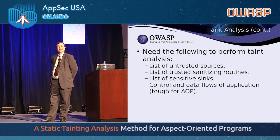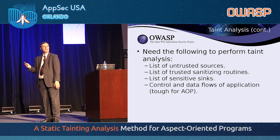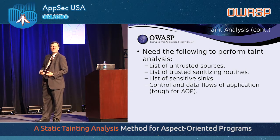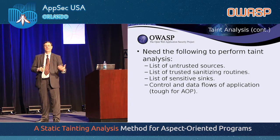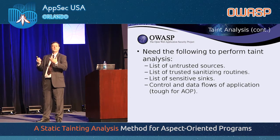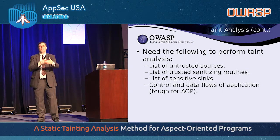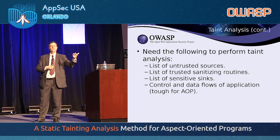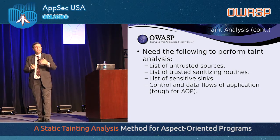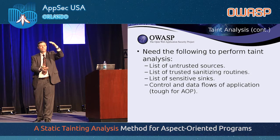Here are the items we need for a valid taint analysis. We need a list of untrusted sources — that's context sensitive, it depends on the application. A web application has different untrusted sources than a word processor or a financial application like Quicken. We also need a list of trusted sanitization routines, a list of sensitive sinks, and we have to be careful about control paths — ifs and loops. Are tainted values being used in those locations? We need to know the control flow and the data flow: where data starts, where it goes, and whether it's sanitized before it's used in a sensitive way.